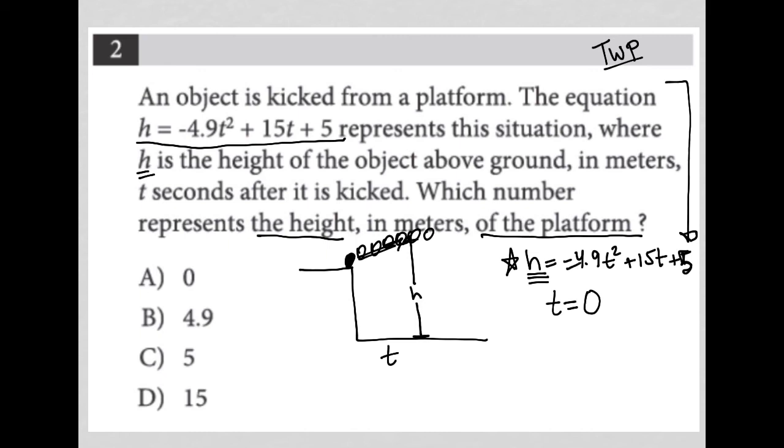So when T is equal to zero, that means this entire quantity here becomes zero. Fifteen times T also becomes zero. And all we have left is five. So we'd have H equals zero plus zero plus five, which obviously means H equals five. Which means that this five must represent the height of the platform, the height before the object is kicked. So our answer is choice C.